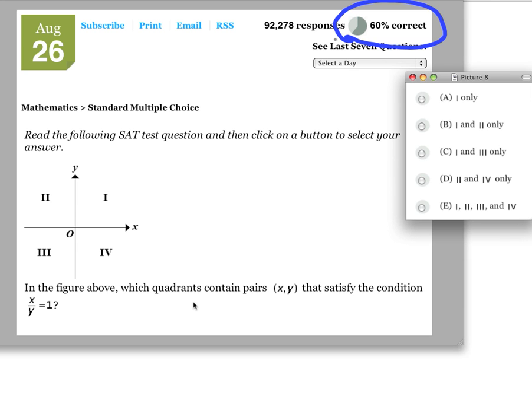In the figure above, which quadrants contain pairs (x, y) that satisfy the condition x over y equals 1?